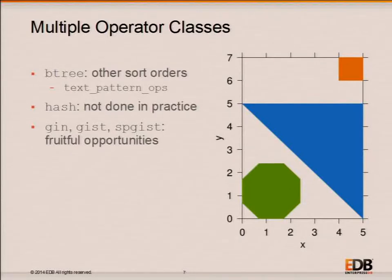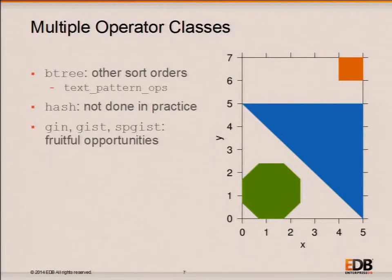The system does not limit you to a single operator class per data type and access method. You can define more than one, though only one can be the default. In the context of Btree, additional operator classes represent alternative sort orders for a data type. For integers, it's hard to imagine a useful alternative ordering. But for the polygon data type, you could sort by area, perimeter, or other measures — and in fact there's no built-in greater-than operator for polygons at all, making it a trick question.